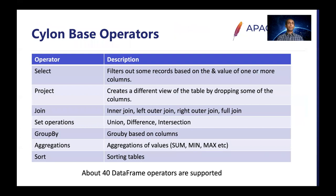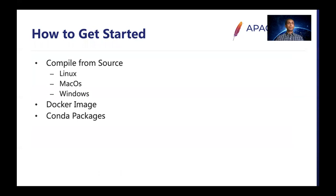Now let's look at some Cylon operators. This table shows a few base operators in Cylon, including join, set operations, group by, aggregate, and sort operations. At the moment, we support about 40 data frame operators and we are hoping to add more in the future. Cylon supports building on Linux, Mac OS, or Windows — we added Mac OS and Windows support recently. If you are looking to quickly get a feel of Cylon, you can use the Docker image. We also provide Conda packages for Linux at the moment and are planning to expand them to Mac OS and Windows.